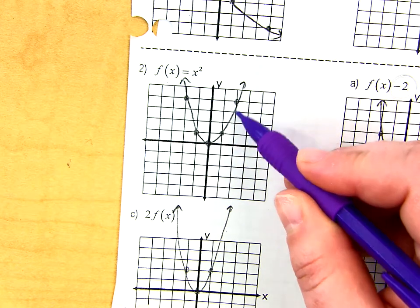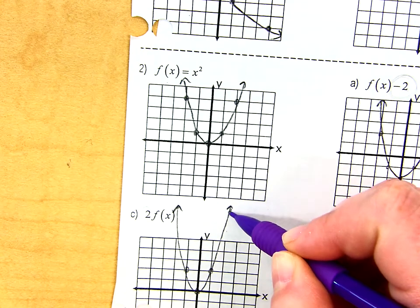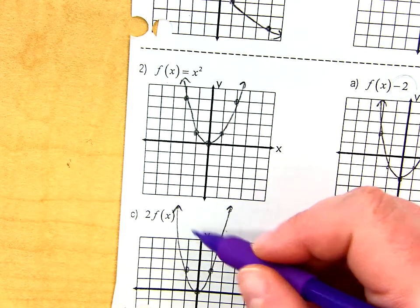a y value of 8. Right? So instead of being at 2, 4, now I'm at 2, 8. That's how I get so high up here. Same thing is happening on the other side.